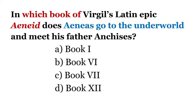Next question. In which book of Virgil's Latin epic, the Aeneid, does Aeneas go to the underworld and meet his father Anchises? Option A: Book 1. B: Book 6. C: Book 7. D: Book 12. It's a tough question, but we get questions from classical literature — Homer's Iliad and Odyssey, Virgil's Aeneid, Dante's epic, and Milton's epic. Try to read at least a gist or outline of these classical works. Answer: B, Book 6.